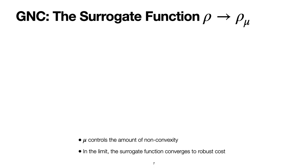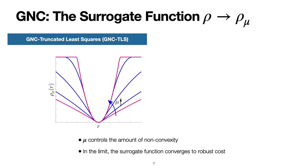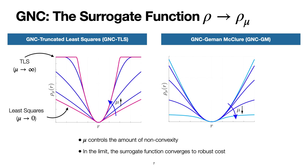The crux of GNC is to design a surrogate function with a control parameter mu. Varying mu changes the surrogate function from convex least squares to a non-convex robust cost function. For example, in the GNC-TLS surrogate function, when mu tends to zero the surrogate tends to a convex cost function, and when mu tends to infinity it recovers the non-convex truncated least squares. As another example, the GNC-GM surrogate function tends to least squares when mu tends to infinity and recovers the GM robust cost function when mu tends to 1.